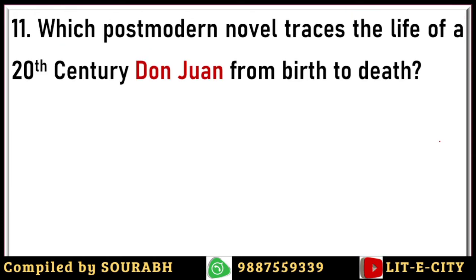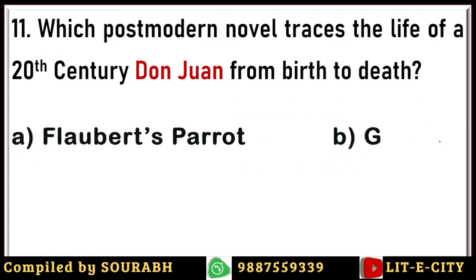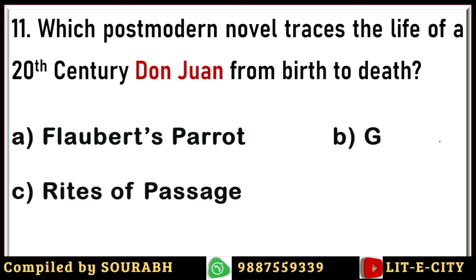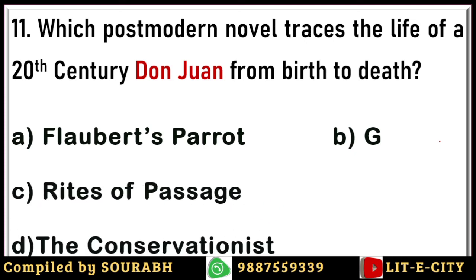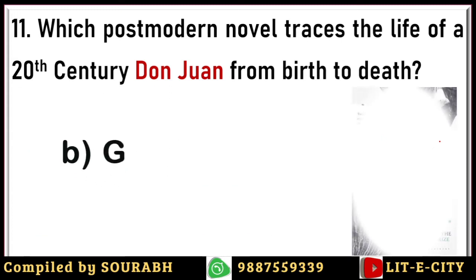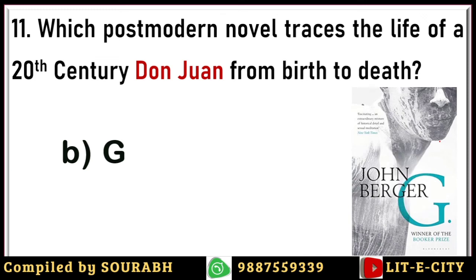Next question: which postmodern novel traces the life of a 20th-century Don Juan from birth to death — a retelling of the classical story attempted by many writers including Byron? Options are Flaubert's Parrot, G, Rites of Passage, and The Conservationist. The correct answer is G, a novel written by John Berger, which also won the Booker Prize. It is a retelling of Don Juan situated in the modern context.